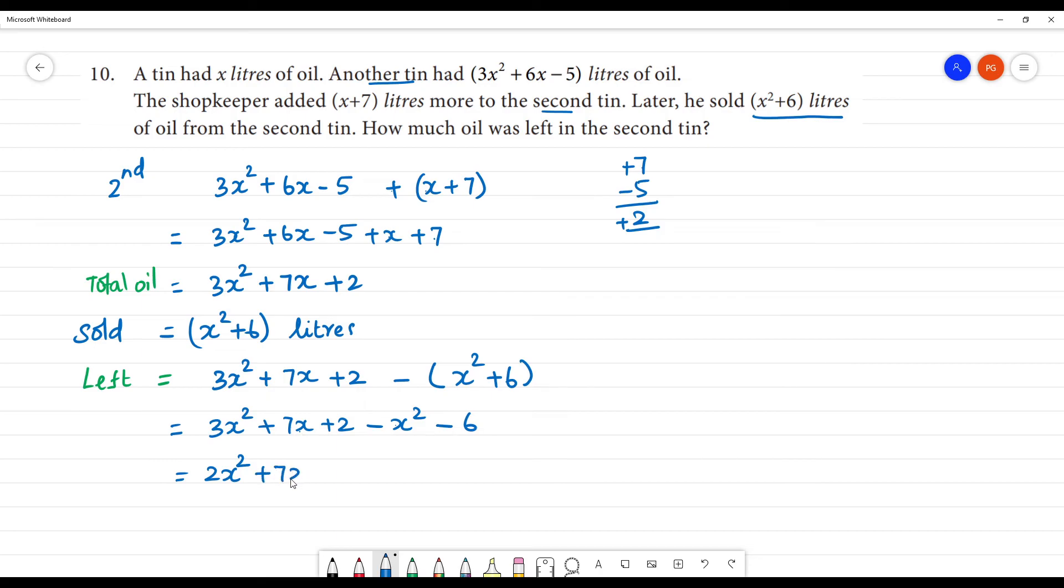Here we have plus 7x. We don't have x here. Here we have 2 and minus 6. So, here we have minus 4.